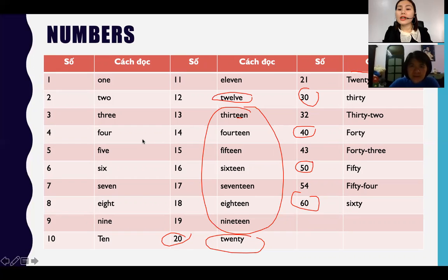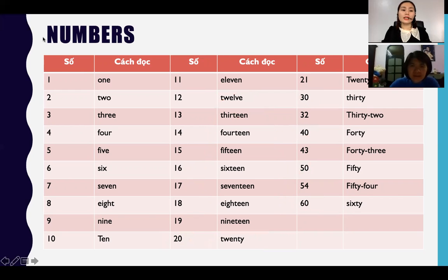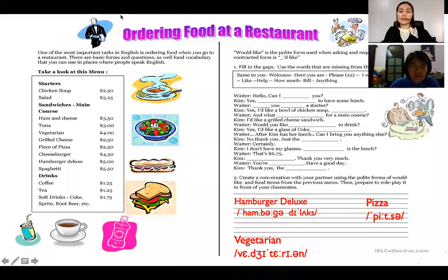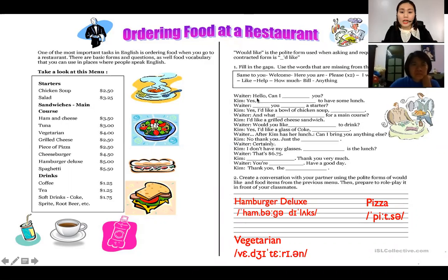30 — 'thirty,' 40 — 'forty,' 50 — 'fifty,' 60 — 'sixty.' Great! Đó là phần numbers rồi. Tiếp theo mình sẽ sang phần ordering at the restaurant. Ordering — ordering thì gì?